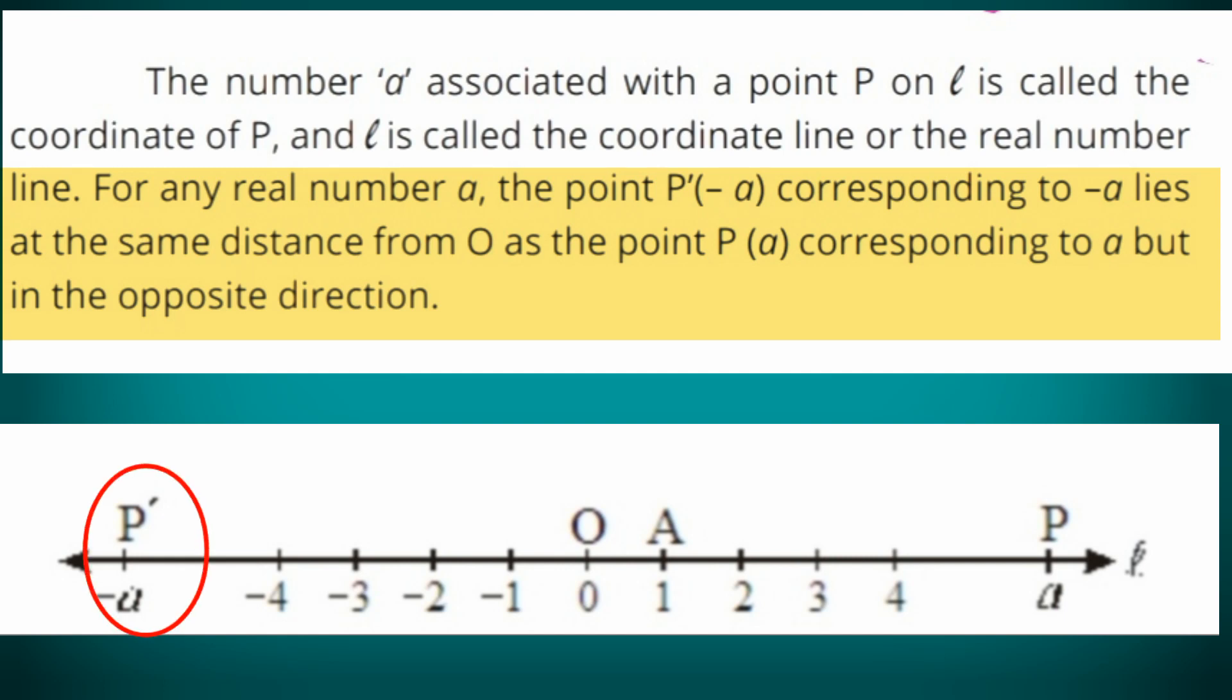For any real number A, the point P'(-A) corresponding to -A lies at the same distance from O as the point P(A) corresponding to A, but in the opposite direction.